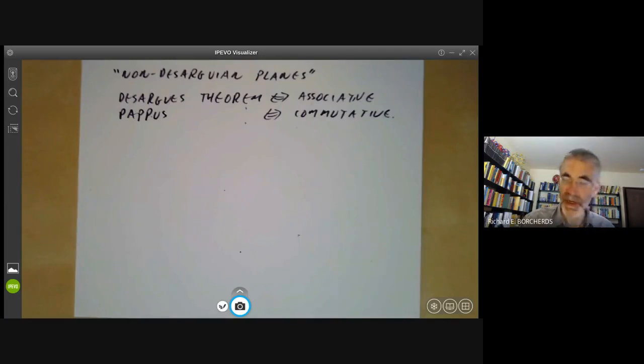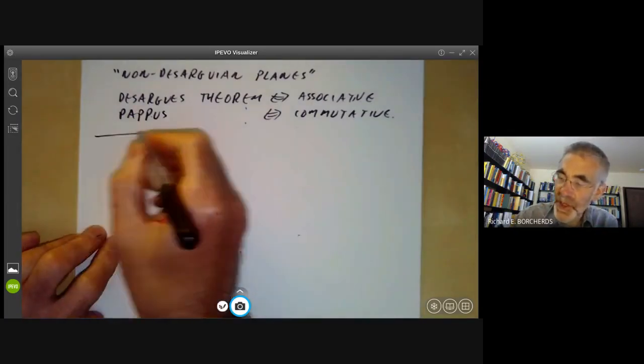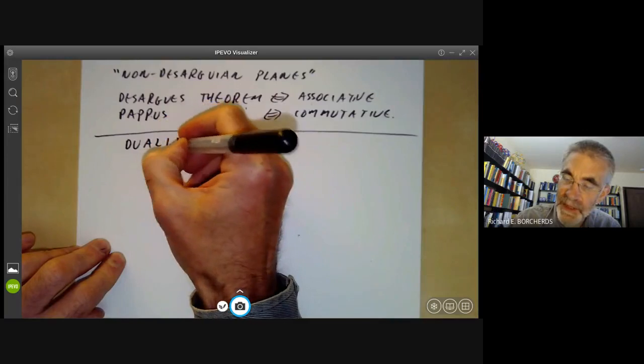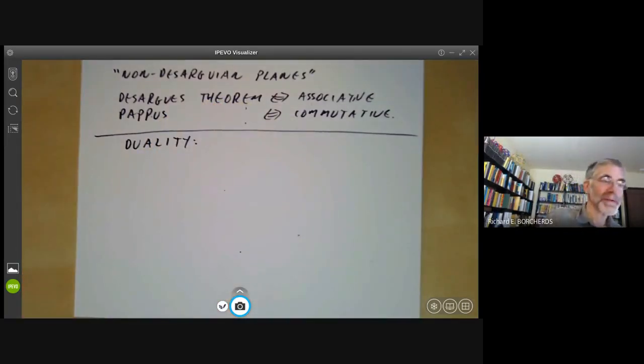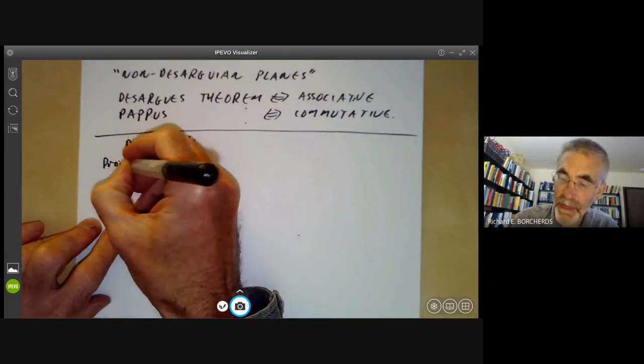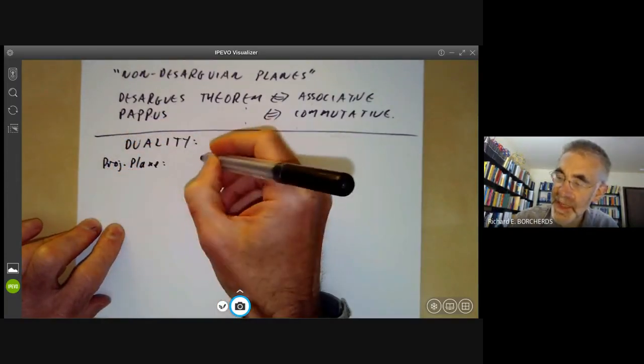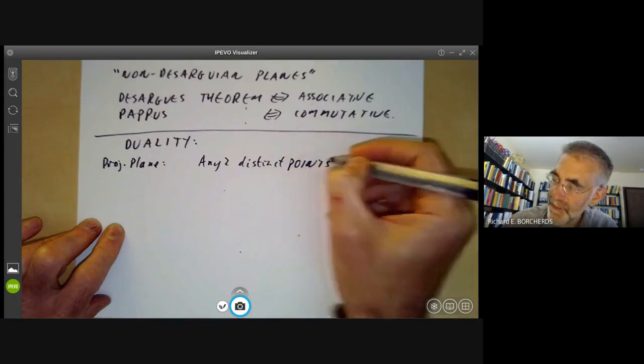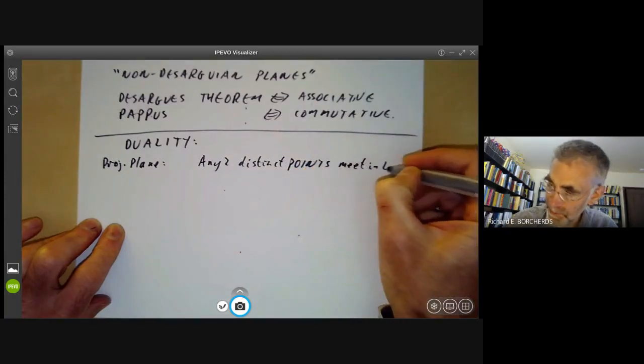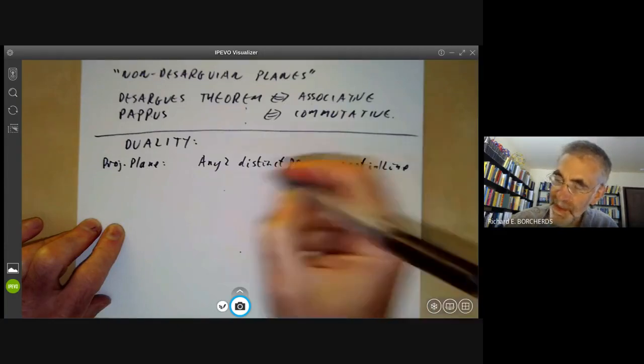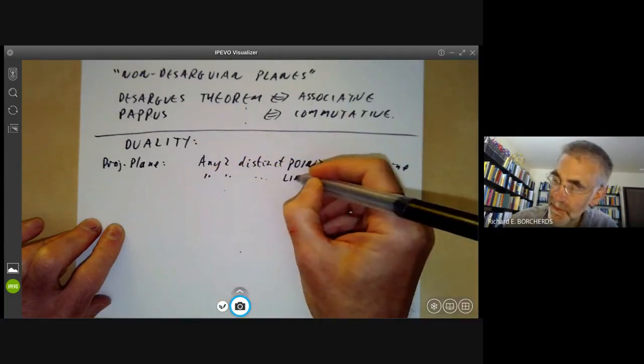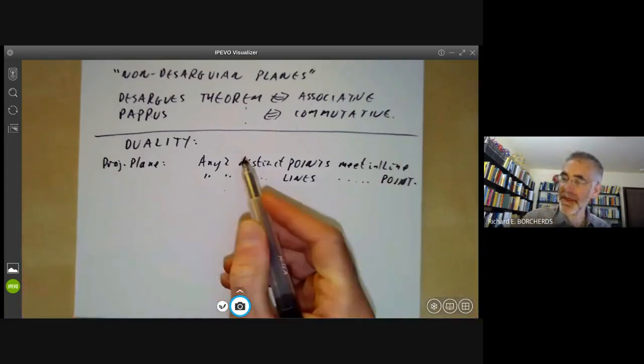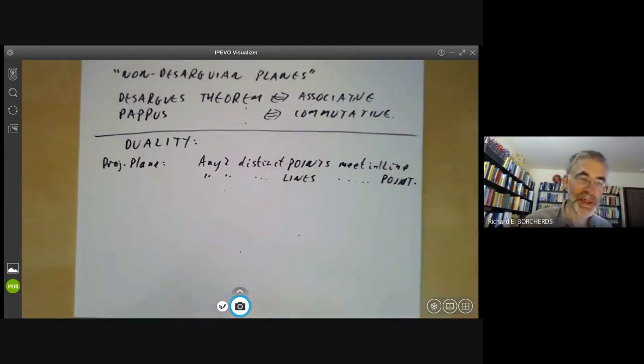There's another property of projective geometry that was noticed fairly early on, which was duality for projective space. So let me give the simplest example of duality. Let's just look at a projective plane. And we have these axioms: any two distinct points meet in one line. And similarly, any two distinct lines meet in a unique point.